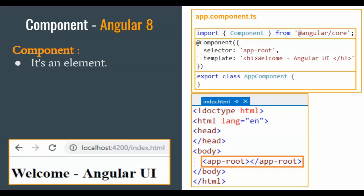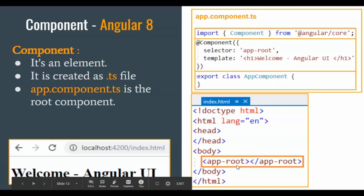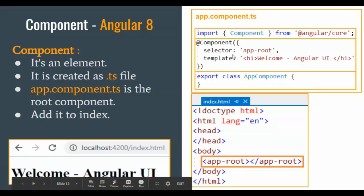In simple words, a component is an element. It is created as a TypeScript file. app.component.ts is the root component — this is the root component and we should always create it. It should always be available in the index file. We normally do not touch our index file; we just add this root component to it.